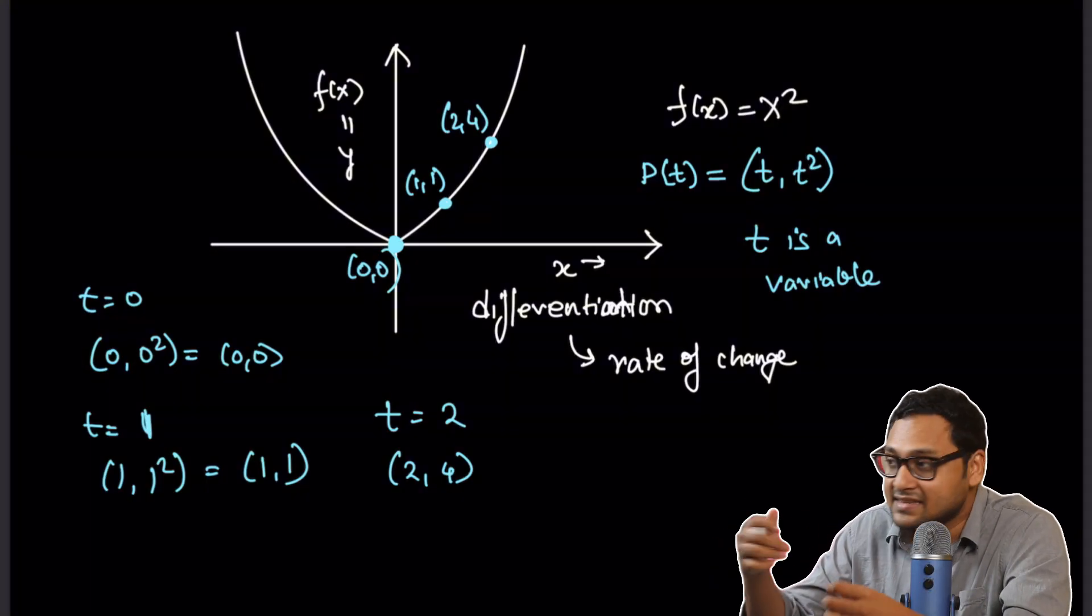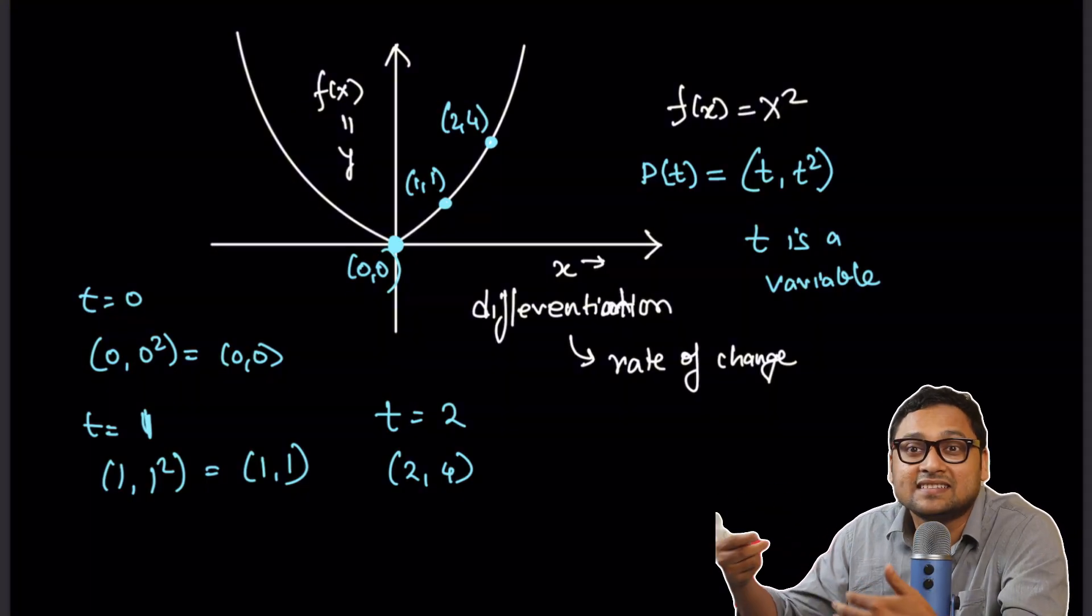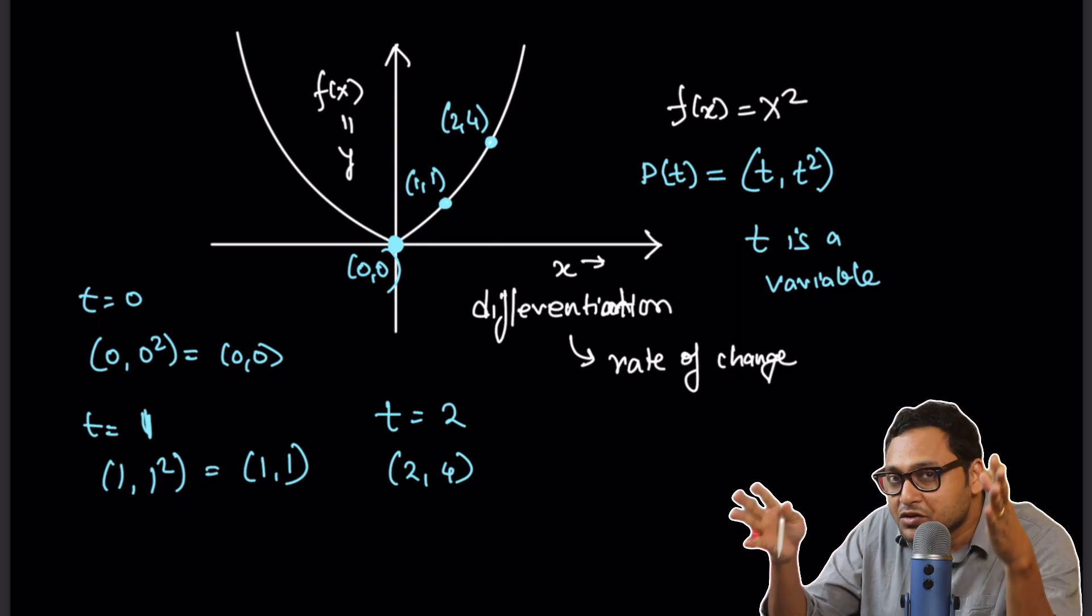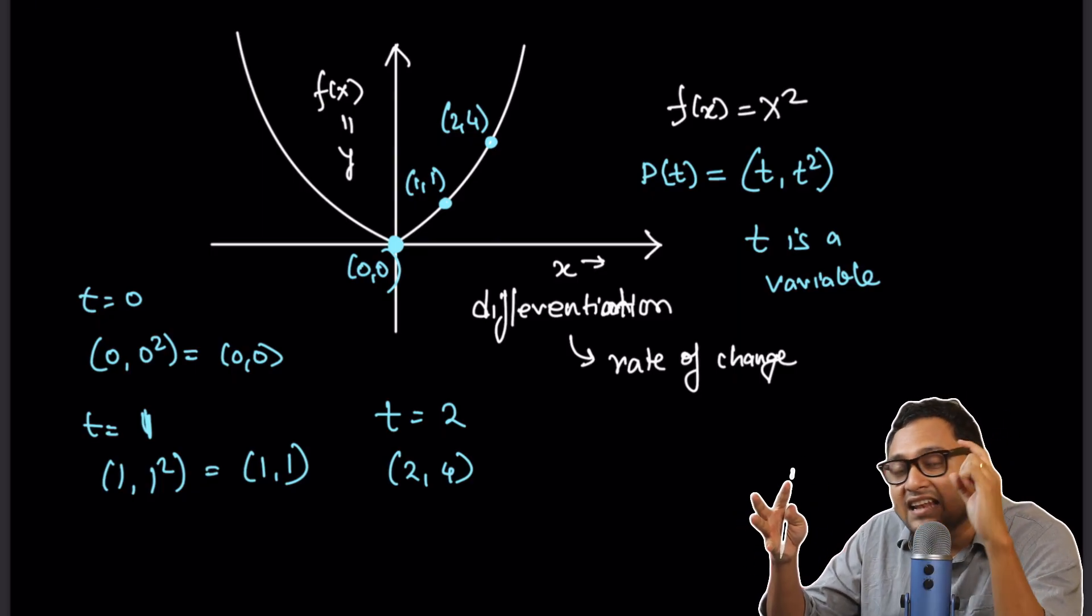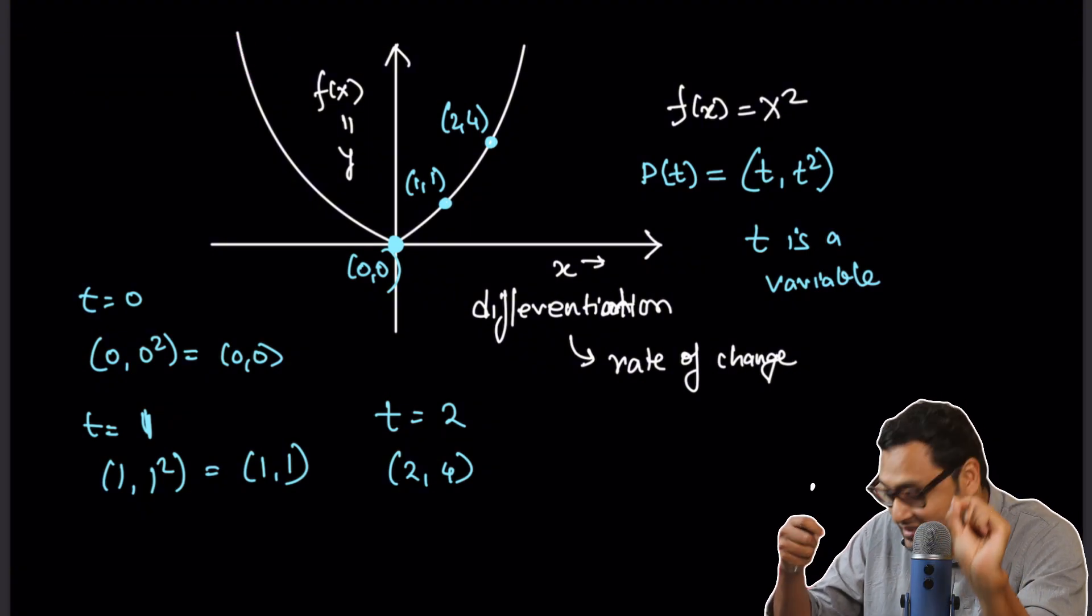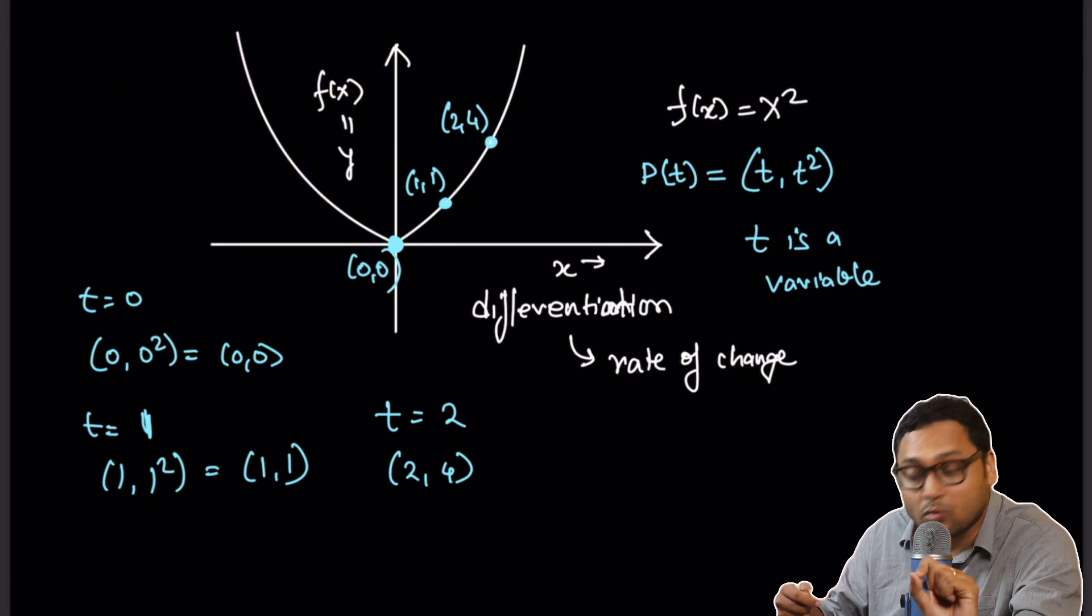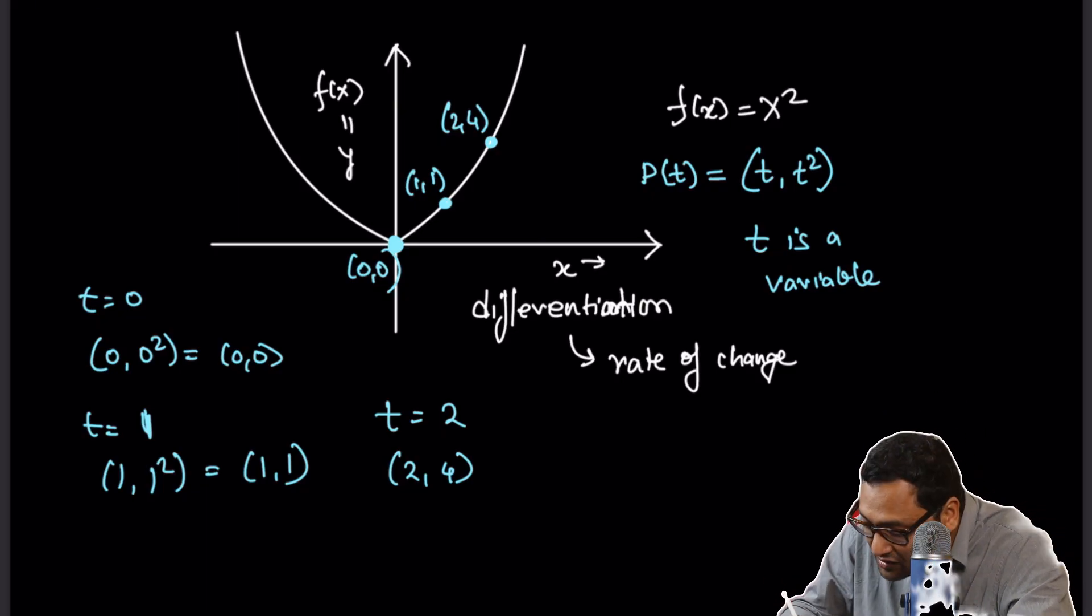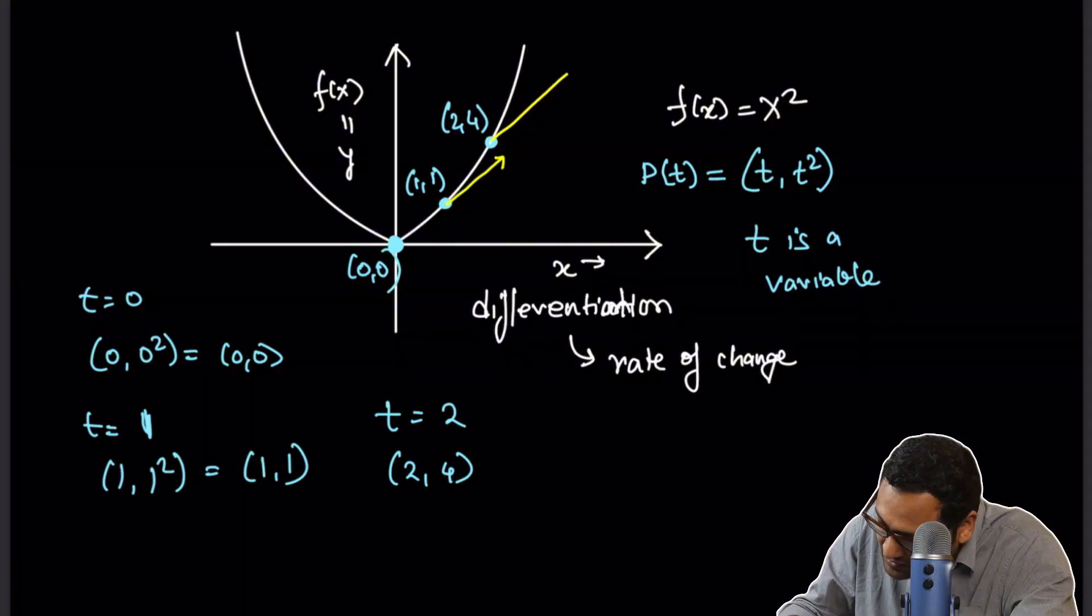So every value of t gives me the coordinates of points on the parabola. That's why I call it, it depends on the parameter t, so I say it's a parametrized equation. Now, what I'm going to do is, I will calculate the tangent line at the point (1, 1), (2, 4), and so on.